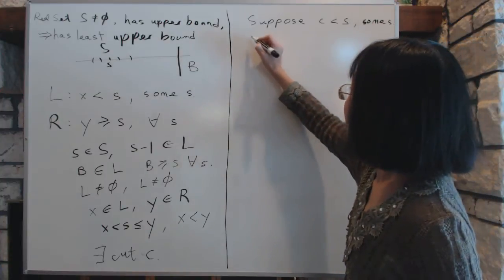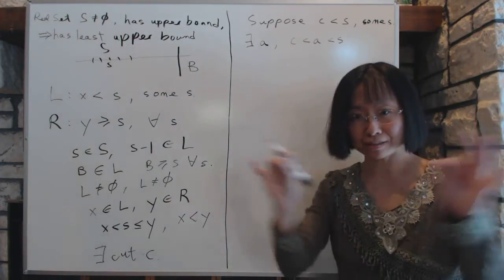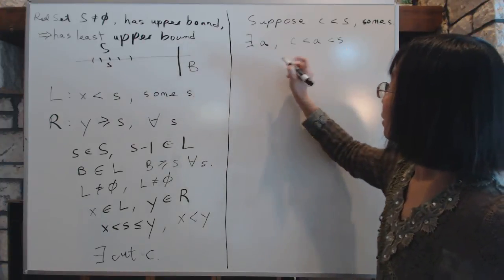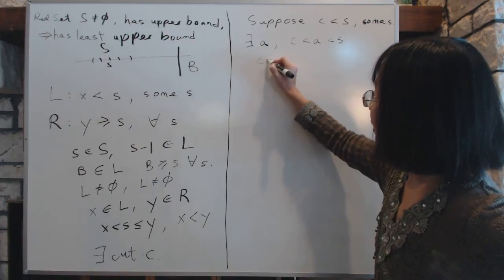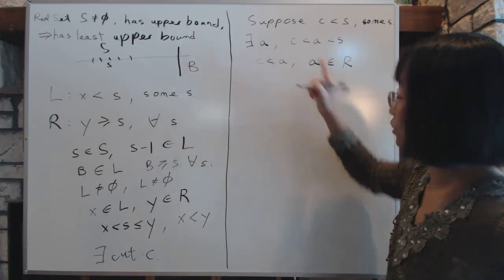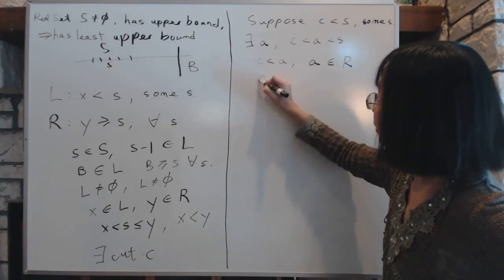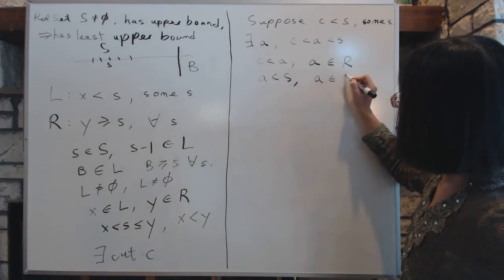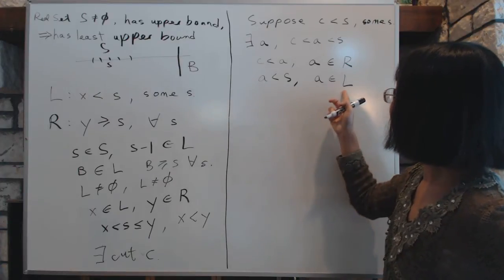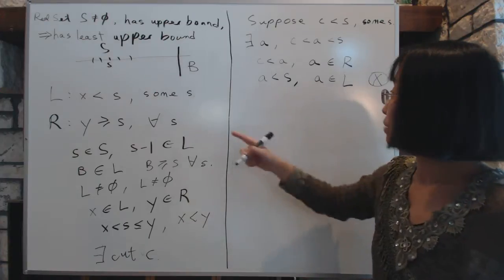If that were true, then there exists a number a such that a is between c and s. In the real number system, you can always find something in the middle. Now a has two qualities: because a is bigger than c, a belongs to the right side, since any number bigger than the cut has to be on the right side. But a is also less than s, so a belongs to the left side — because the left side contains all numbers less than s for some s. But that is the contradiction, because the left side and the right side do not have common members.